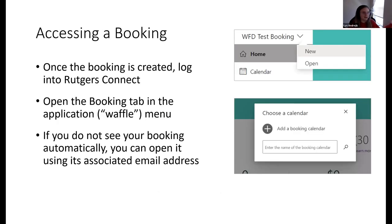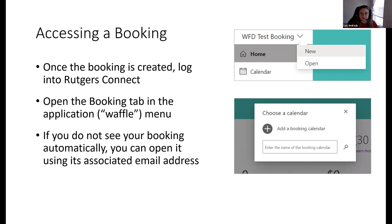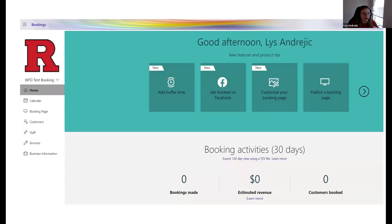Once you've been given administrator access, you can open Bookings through the waffle menu — there is a Bookings tab. There's also an application on mobile and web devices. If you open Bookings and don't see your booking right away, you can look it up by name in the search section or by email address. If you have a different booking already open, clicking under the name of the booking will give you the option to open a new one.